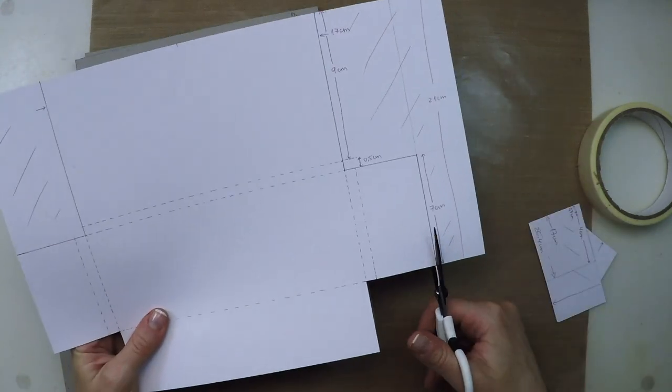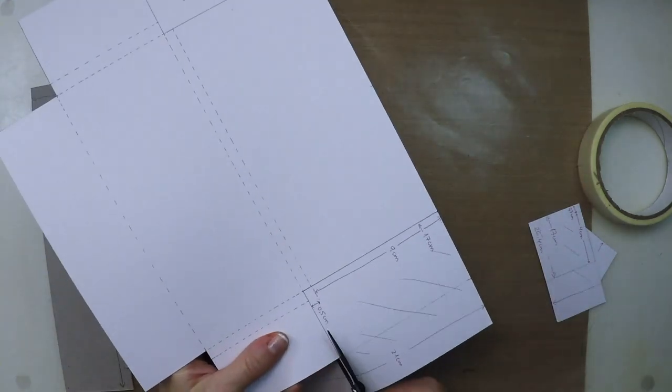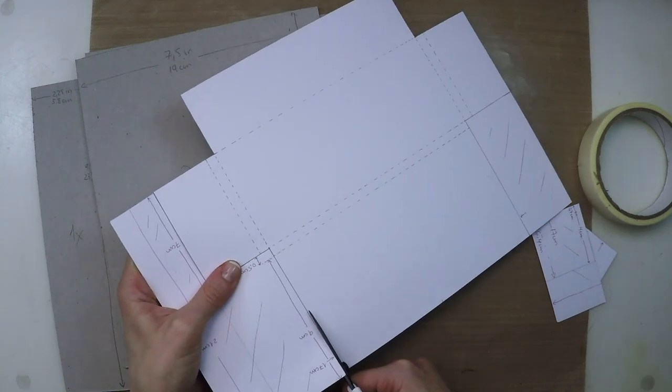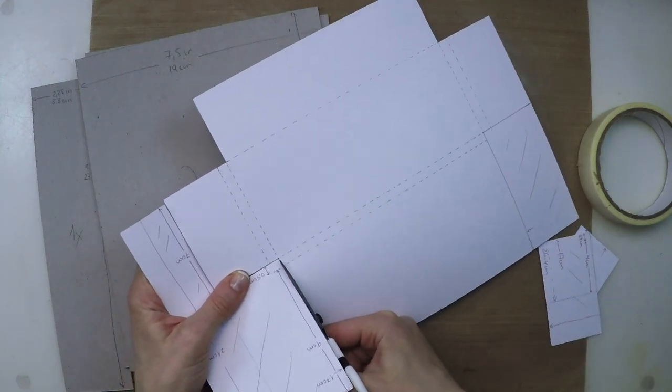Here I'm just trimming the excess, cutting through those lines, and then on the dotted lines on a later stage I will fold those lines, mark them, score them, to create my pocket.